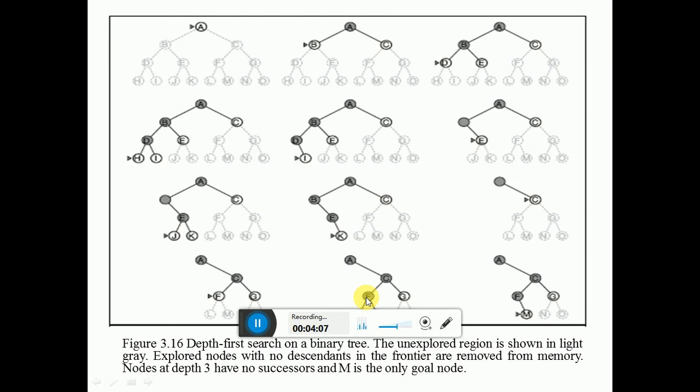From F, return to C, then from C move towards G. G expands into N and O. From N there is no expansion, and from O there is no further expansion. At every node you have to check if it's the goal node.